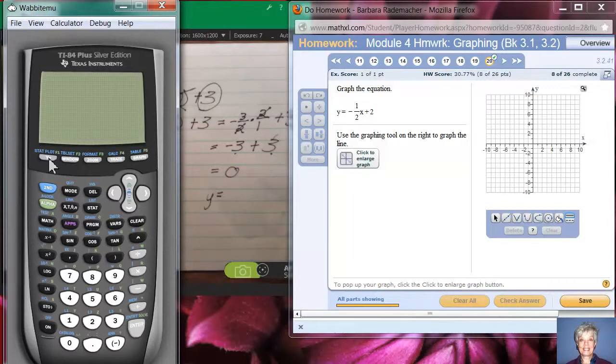Click on the y equals button. Right there. Now, take negative 1 half x plus 2. Right here, I'm going to use the negative button, not the minus button. Negative 1 divided by 2. Okay, now I'm going to say x. I get all of my x's from this button right here. Click. Negative 1 half x plus 2. All right, that's the equation of my line.